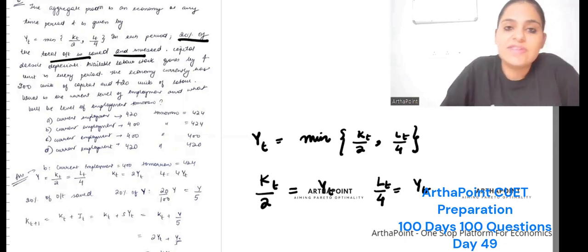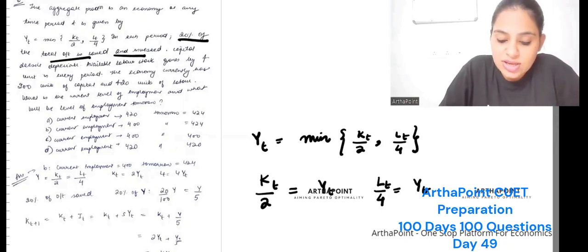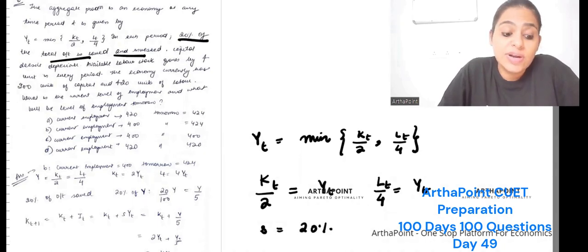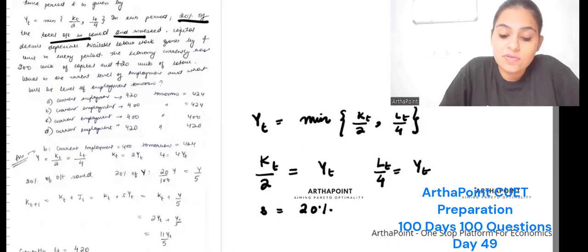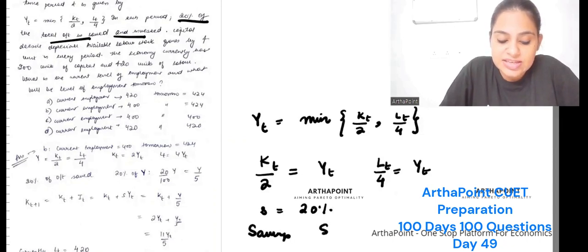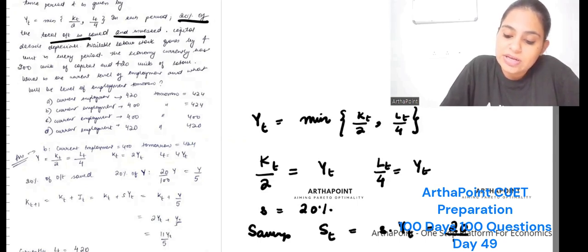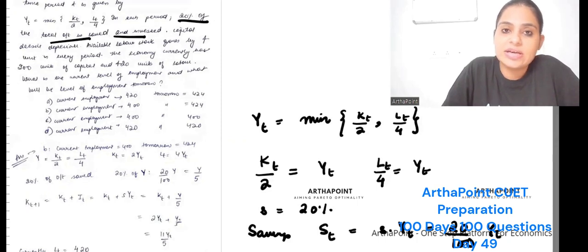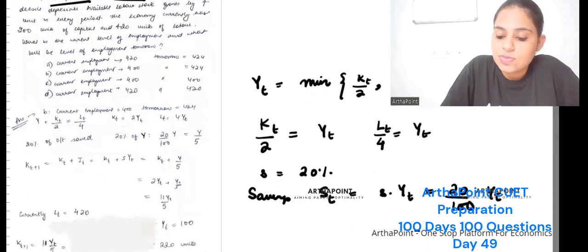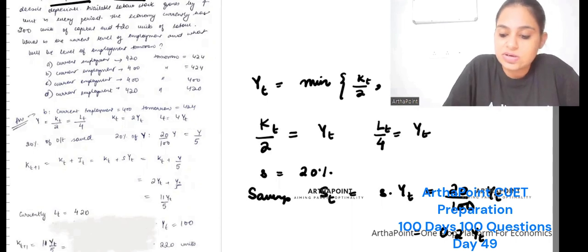In each period, 20 percent of the total output is to be saved and invested. So the savings rate is 20 percent. Savings in period t — that will be 20 percent of Y_t, so S_t = 0.2 * Y_t. This is your savings rate.